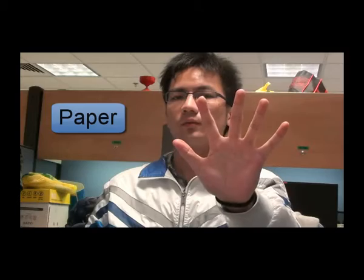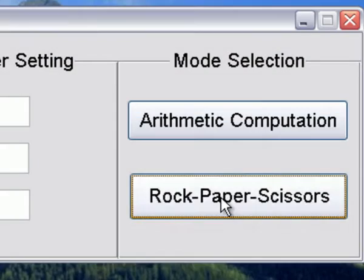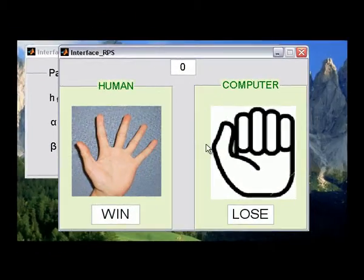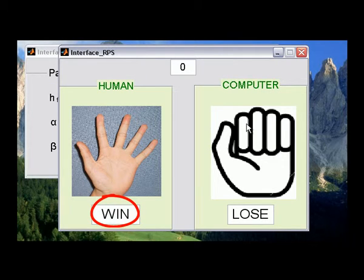The second application is rock-paper-scissors game. We define three hand gestures for the three weapons. Our system can capture the command sent by the user and compare it with the computer and decide who is the winner.